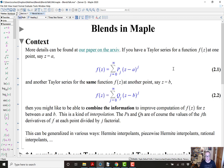More details can be found on our paper on the archive. If you have that Taylor polynomial at one end of the interval and at the other end of the interval, you might like to combine that information because you hope to improve the accuracy. This is a kind of interpolation.